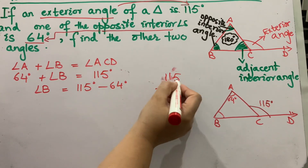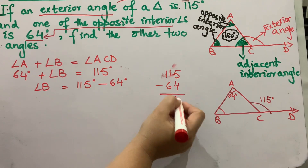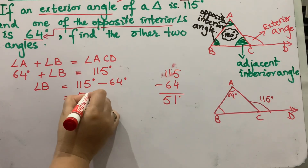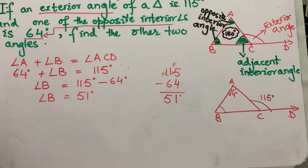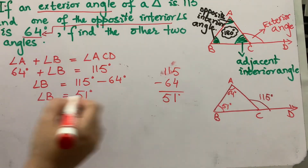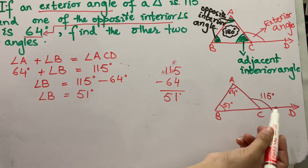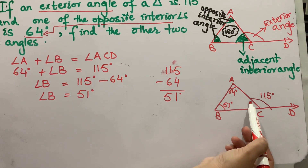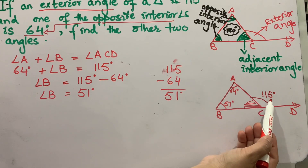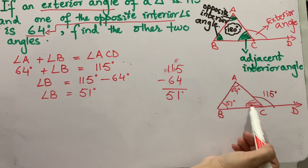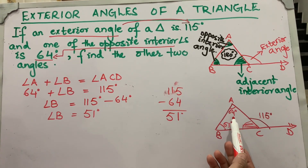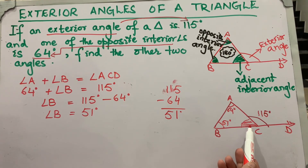Now, 5 minus 4 equals 1, and 11 minus 6 equals 5, so angle B equals 51 degrees. We can verify: 51 plus 64 equals 115 degrees. You can also find the adjacent interior angle by subtracting 115 from 180 degrees, or by using the property that the sum of interior angles of a triangle equals 180 degrees.